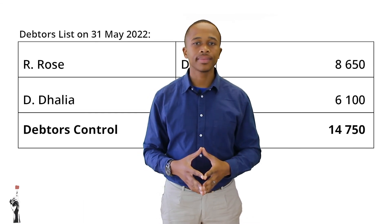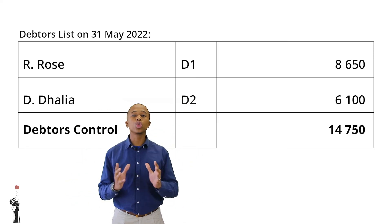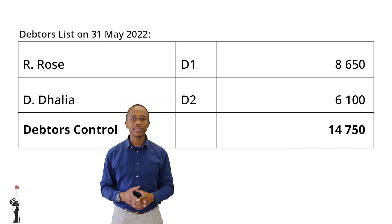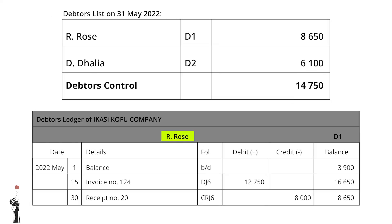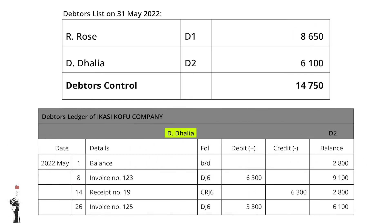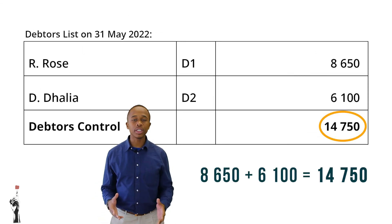Let's look at the last part of this lesson — we will be looking at the debtors list. The debtors list is a summary of all the money that is owed by debtors to IKC, Ikasi Kofu Company. Let's look at R Rose as an example. The debtors control amount of R14,750 will be the total amount that debtors owe IKC.